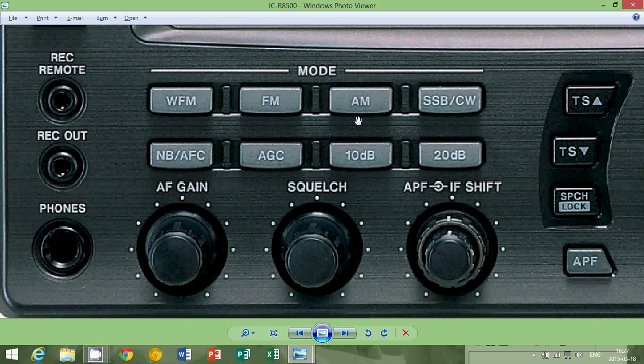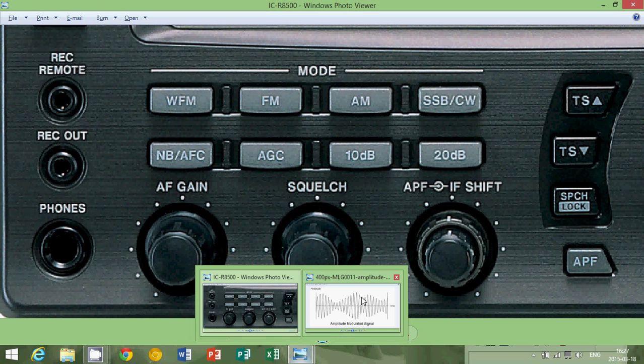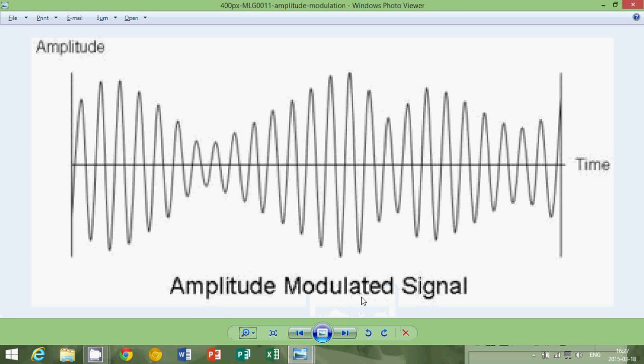So AM means amplitude modulation. It means that what actually we are sending out is variations in the strength of a signal. In an AM signal, we have a carrier, which is a basic signal. So if you look at the middle here, there's a line.